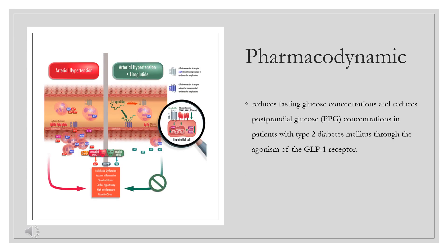Pharmacodynamics. Dulaglutide reduces fasting glucose concentrations and reduces postprandial glucose (PPG) concentrations in patients with type 2 diabetes mellitus through the agonism of the GLP-1 receptor. This drug primarily acts as an incretin mimetic hormone or analog of human glucagon-like peptide 1, which normally acts on the GLP-1 receptor.